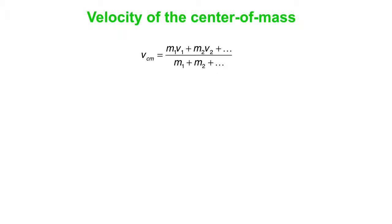And a similar one for velocity. The velocity of the center of mass is m1 v1 plus m2 v2 plus blah blah blah over the total mass m1 plus m2 plus blah blah blah.